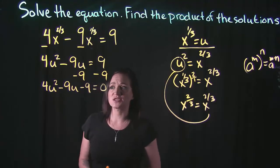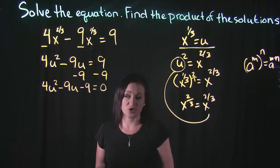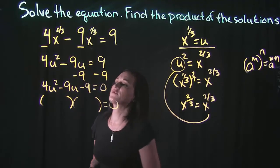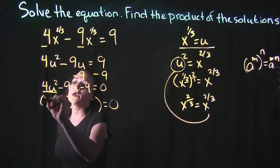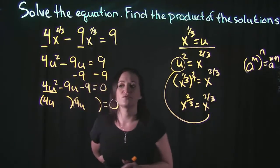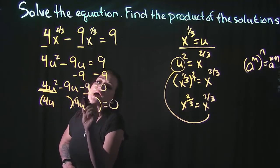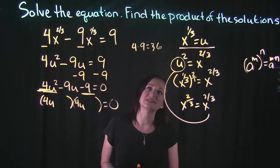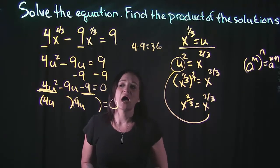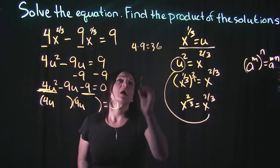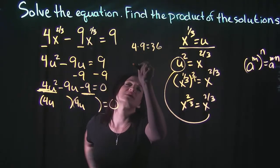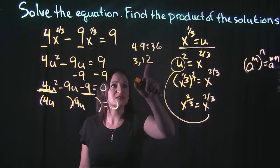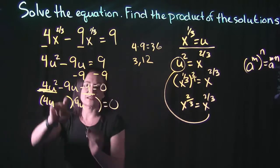Now I'm going to try and factor this. Factoring is always my first step for solving a quadratic equation, and I'm going to use no-fuss factoring. The first step says to take the first term — 4u squared — and repeat it twice: 4u, 4u. The second step is to take your leading coefficient times your constant: 4 times 9 is 36. I want factors of 36 that add or subtract to get 9. Checking: 1 times 36, 2 times 18 — I believe 3 and 12 will work. 3 times 12 gives 36, and 12 minus 3 gives 9.